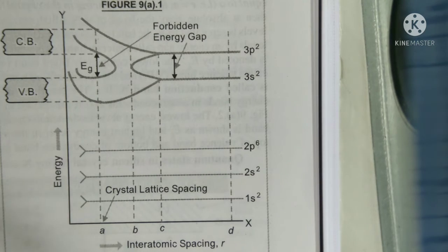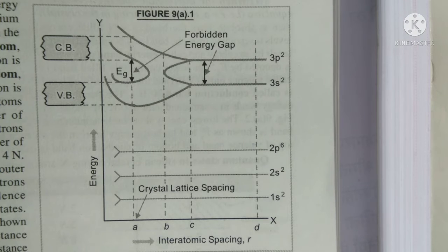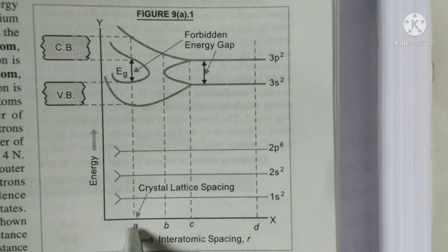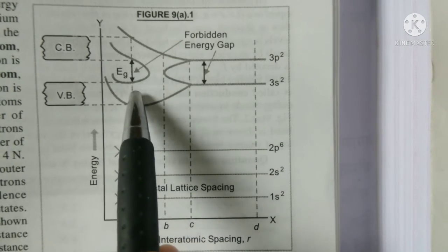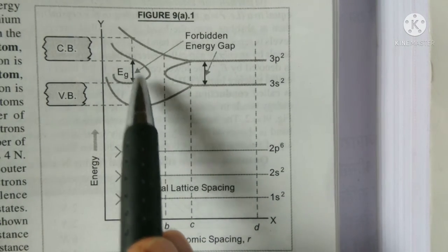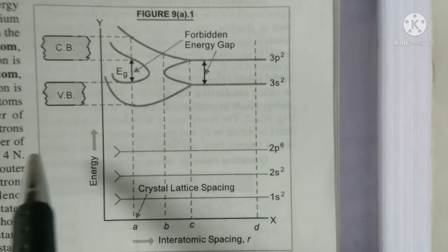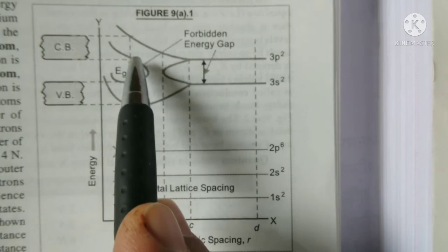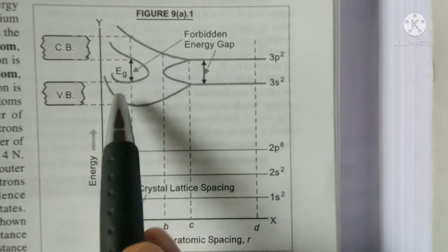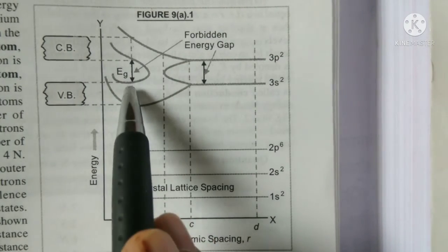When the interatomic spacing R is equal to A which is the actual lattice side, then the 4N filled energy levels separated from the 4N unfilled energy levels. The 4N filled levels will come to the lower side and 4N unfilled levels will go to the upper side. In between there will be an energy gap.